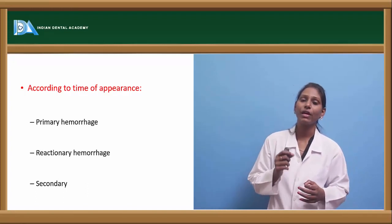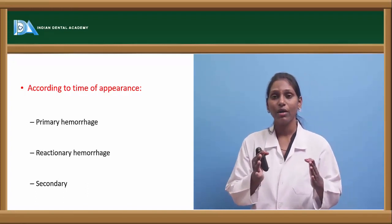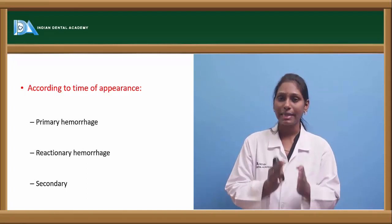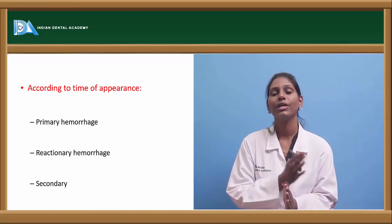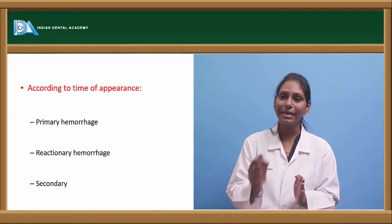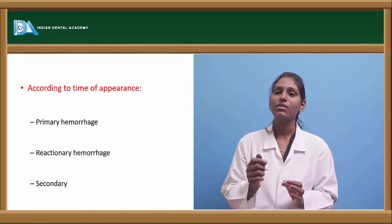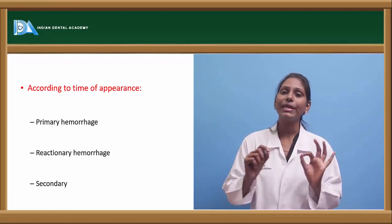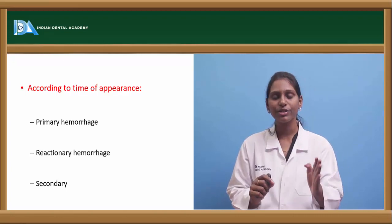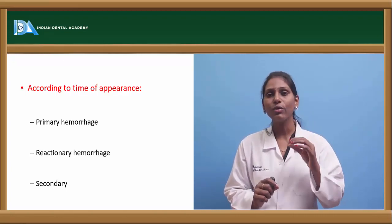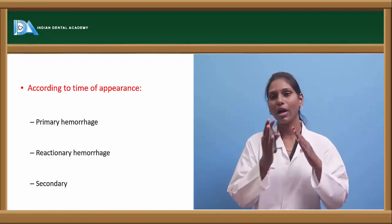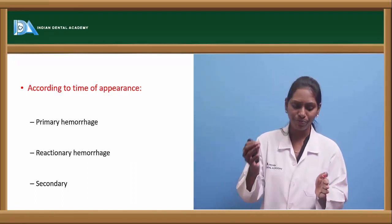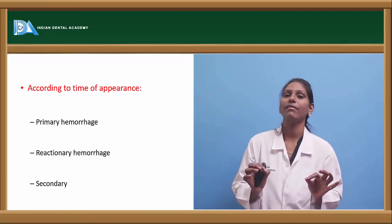Based on time of appearance, hemorrhage is categorized as primary, reactionary, or secondary. Primary hemorrhage occurs at the time of operation or injury. Reactionary hemorrhage occurs within 24 hours after surgery or trauma — most commonly between four to six hours — after the initial stoppage of hemorrhage.